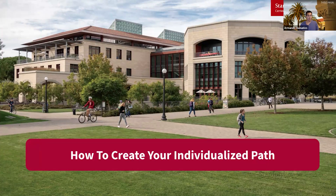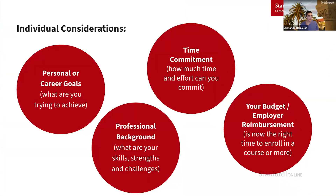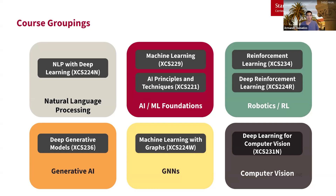Now we're going to talk about how to create your individualized path. There are some individual considerations to take into account as you design how you want to take these courses to complete the AI program — including personal or career goals, professional background, time commitment, and your budget. Here are the course offerings grouped by different topics such as NLP, computer vision, robotics, and generative AI, which is a great reference to figure out what courses best align with what you're trying to learn or your specialties.